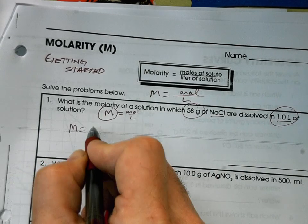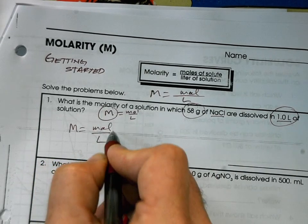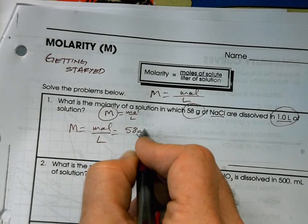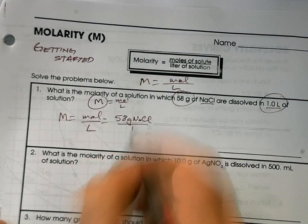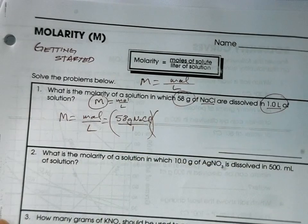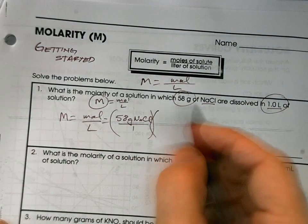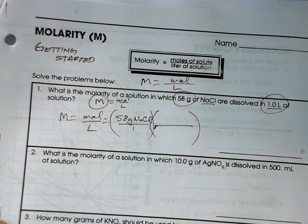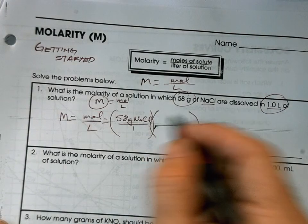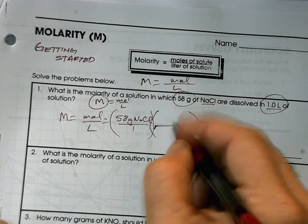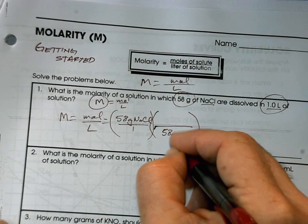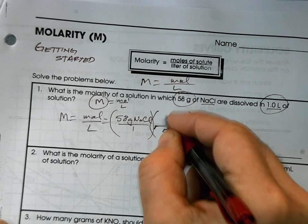I'm going to say capital M is equal to moles over liters. Well, moles are going to be 58 grams of NaCl. I'm going to put that over one. And you need to multiply or divide by the molar mass of salt to change this into moles. What do you need to do? You need to divide. And what is the molar mass of salt? It happens to be 58 grams of NaCl is one mole.